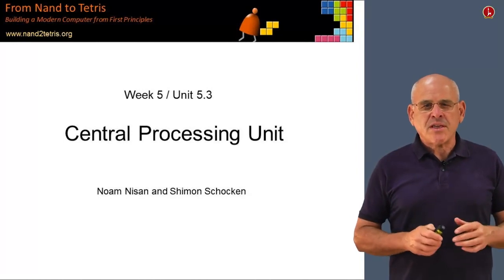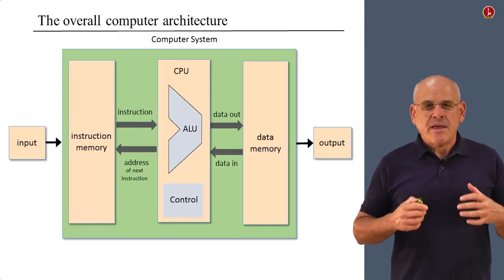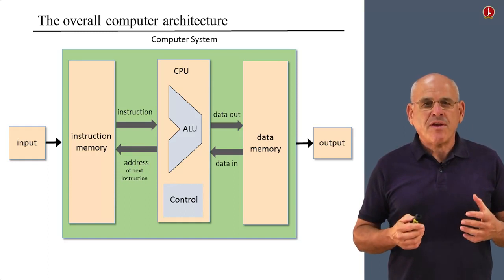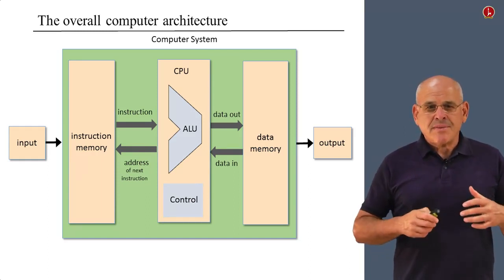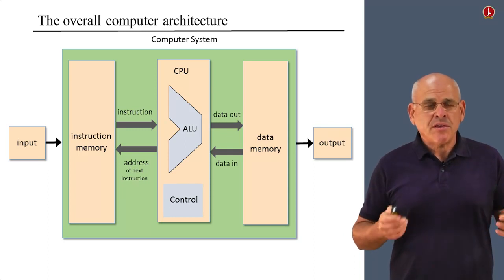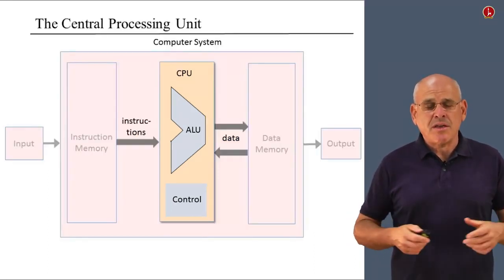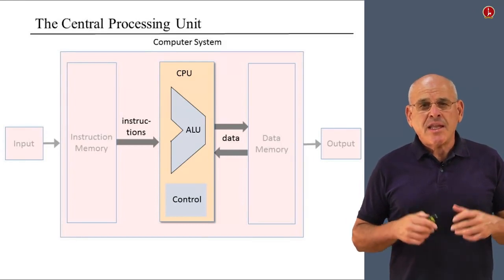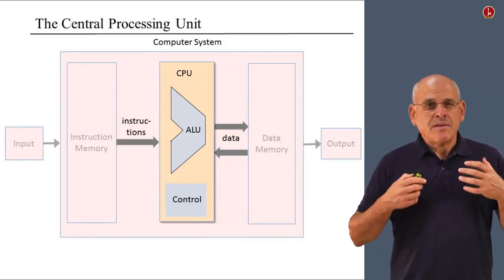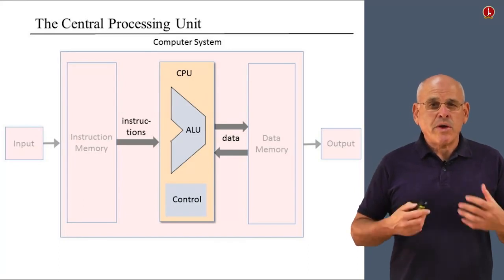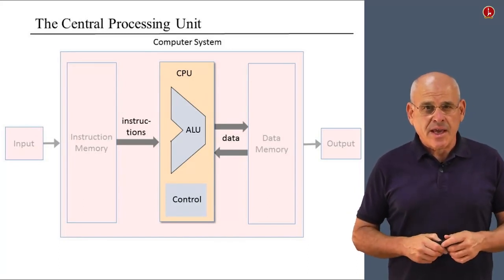The central processing unit, also called the CPU, is the centerpiece of every computer hardware architecture. It is the hub of computation, because this is where all the calculations of the machine take place. It is also the seat of control — this is where decisions are made about which instruction should be fetched and executed next.